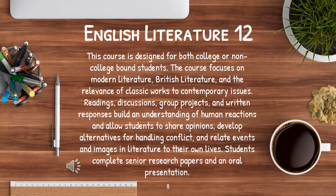English Literature 12: This course is designed for both college and non-college bound students. The course focuses on modern literature, British literature, and the relevance of classic works to contemporary issues. Readings, discussions, group projects, and written responses build an understanding of human reactions and allow students to share opinions, develop alternatives for handling conflict, and relate events and images in literature to their own lives. Students complete senior research papers and an oral presentation.